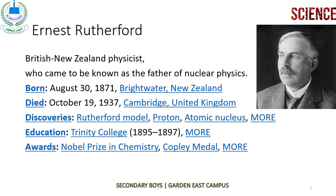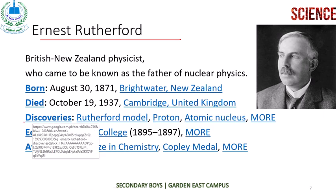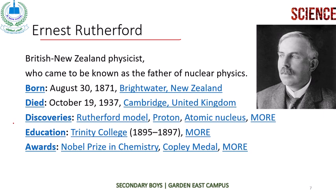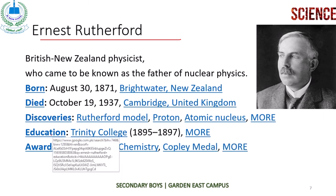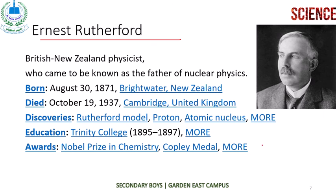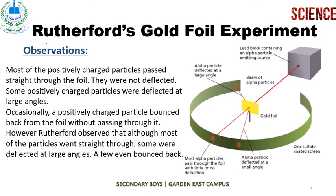Let's talk about Ernest Rutherford. He was a British-New Zealand physicist — born in New Zealand and died in Cambridge, UK. He discovered different models like the Rutherford model, the proton, the atomic nucleus, and more. He was awarded the Nobel Prize in Chemistry along with many other awards and medals. He worked in the 19th and 20th century.